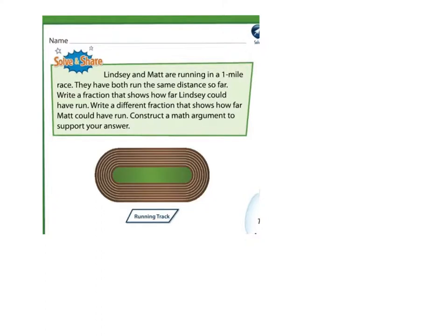So how can you find fractions that represent the same part? It says write a different fraction that shows how far Matt could have run. How can that happen? You might use fraction strips or number lines to find equivalent fractions.